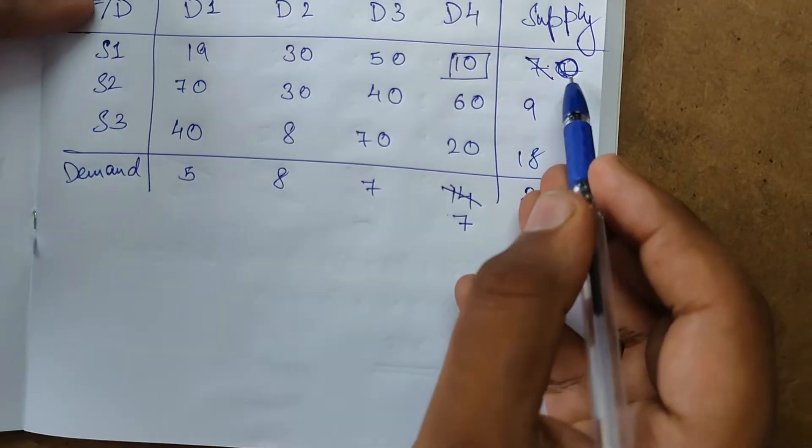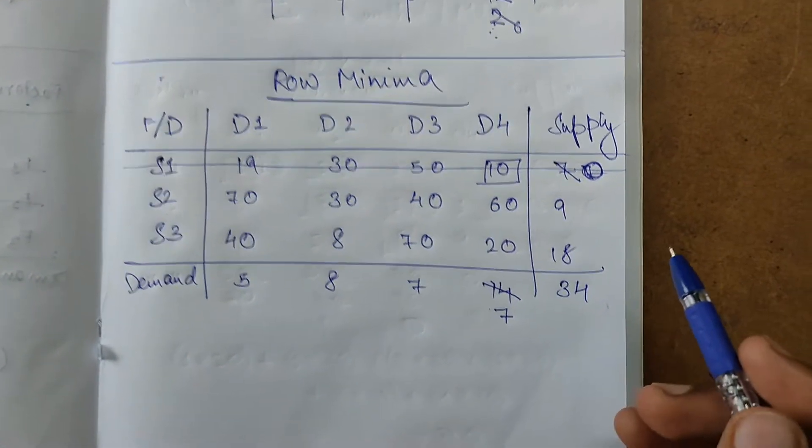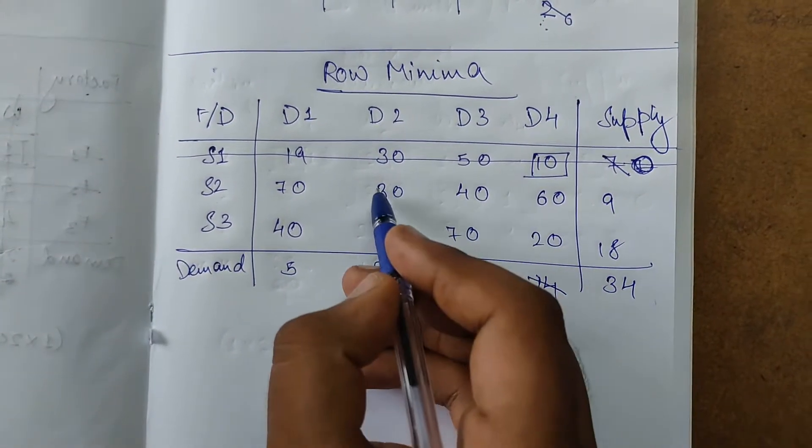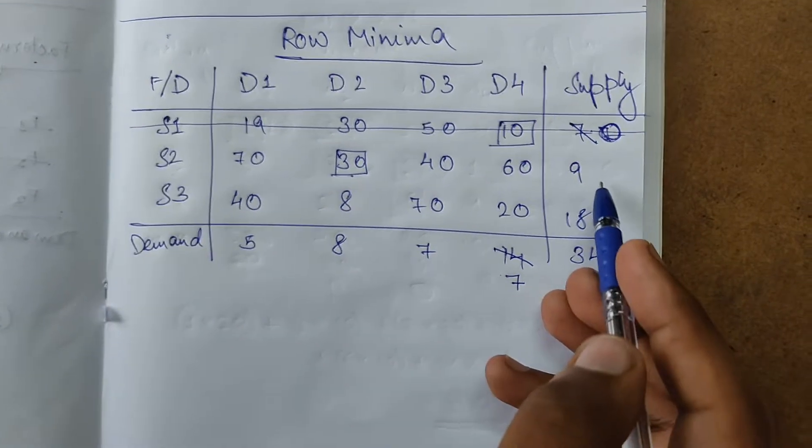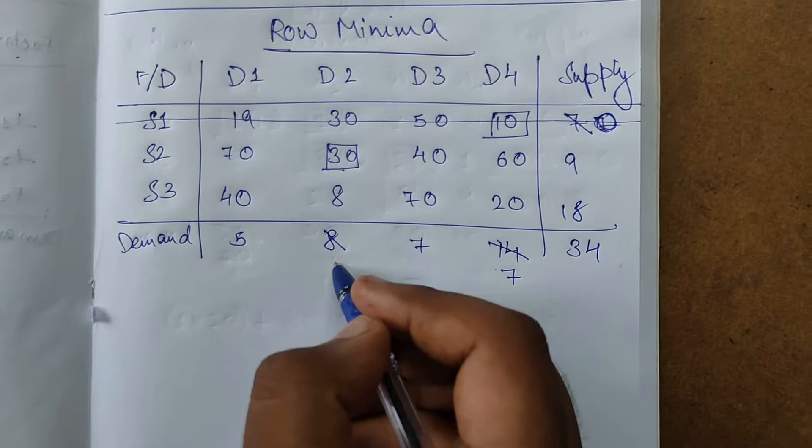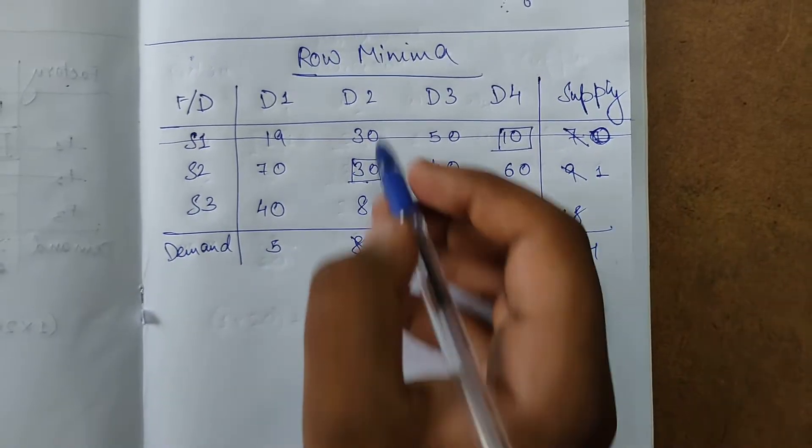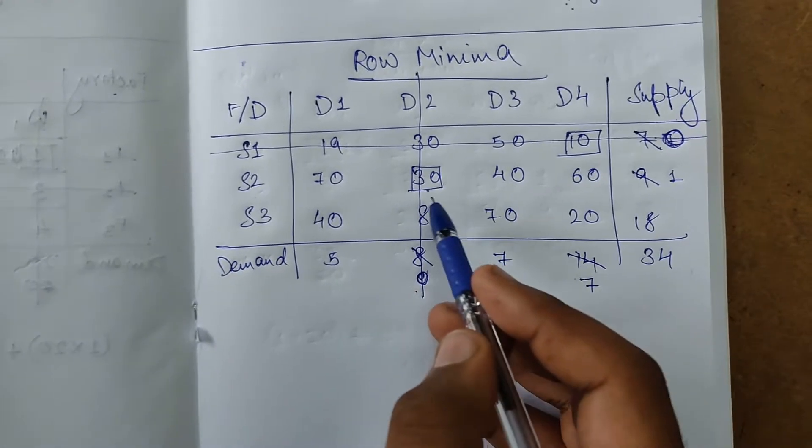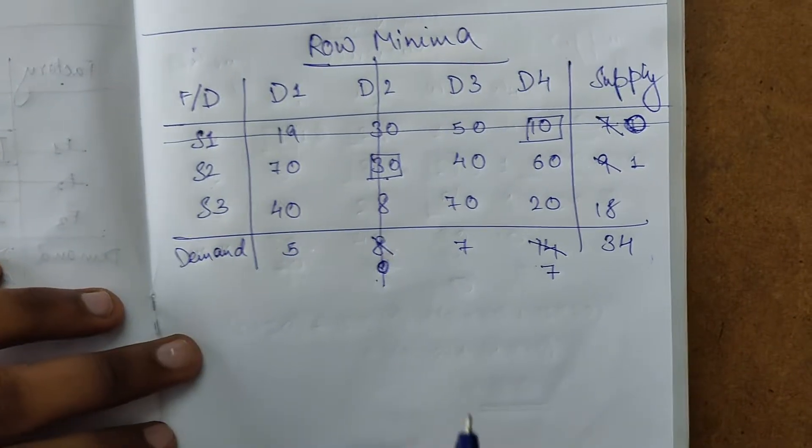So 0. Number of units is 30, so 8 into 30, plus. Next.